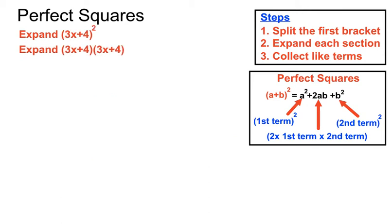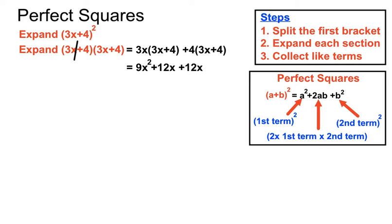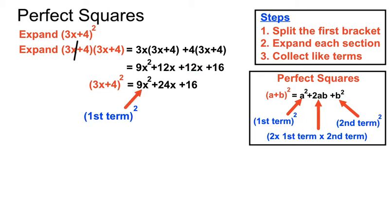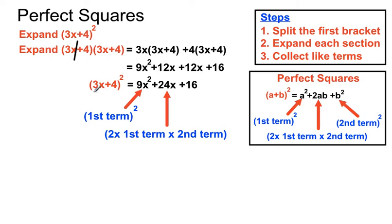3x plus 4 squared is 3x plus 4 times 3x plus 4. Splitting that first term and expanding: 3x times 3x is 9x squared, plus 12x plus 12x plus 16. Joining the middle terms, 12x plus 12x becomes 24x, and 16 is 4 squared. This follows the pattern: the first term 3x squared gives 9x squared, two lots of 3x times 4 gives 24x, and the last term 4 squared gives 16.